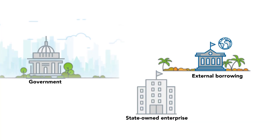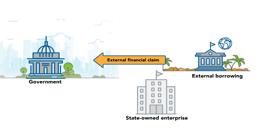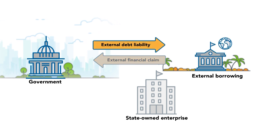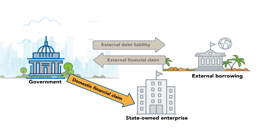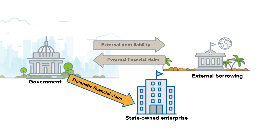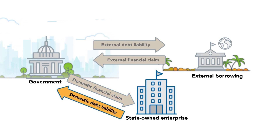So here, we have two separate financial claims. First, the foreign bank has an external financial claim in the form of a loan on the government. Government has an external debt liability in the form of a loan to the foreign bank. It is also possible that this debt liability is in the form of debt securities or another debt instrument. Second, because of the on-lending, the government has a domestic financial claim, typically in the form of a loan, on the state-owned enterprise. The state-owned enterprise has a domestic debt liability in the form of a loan to the government.